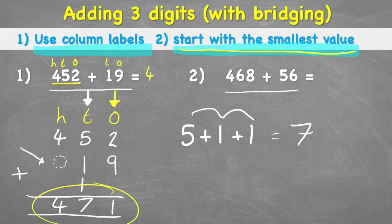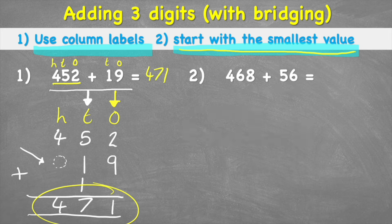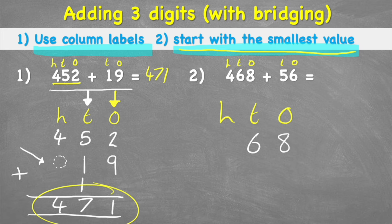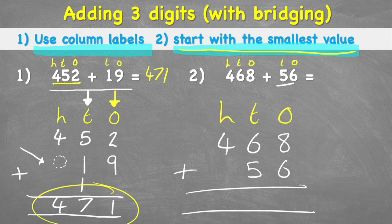So the answer to 452 plus 19 equals 471. For question two, again start by putting ones, tens, and hundreds labels. I can see I have eight ones, six tens, and four hundreds in 468, and six ones and five tens in 56.